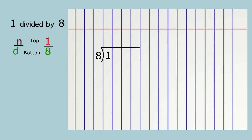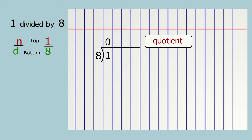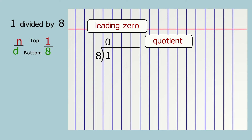How many times does eight go into one? That means if I have one of something, how many times can I subtract eight? Write your answer directly above the one. The answer is zero. This zero shows us there are no whole numbers in the quotient. It's called a leading zero because it appears to the left of the decimal point. When we write the decimal point, we might erase the zero or keep it as a placeholder.